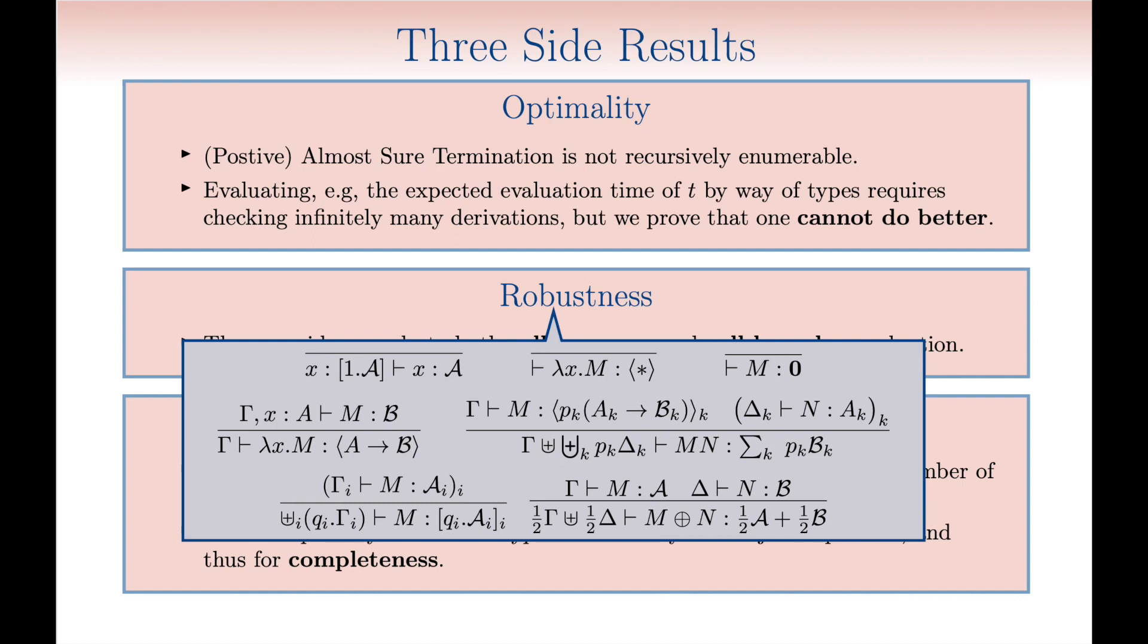The robustness is a variation on the theme of our type system, this time tailored for call-by-name evaluation. As you can see, the rules need to be tuned, but the overall structure remains essentially the same.